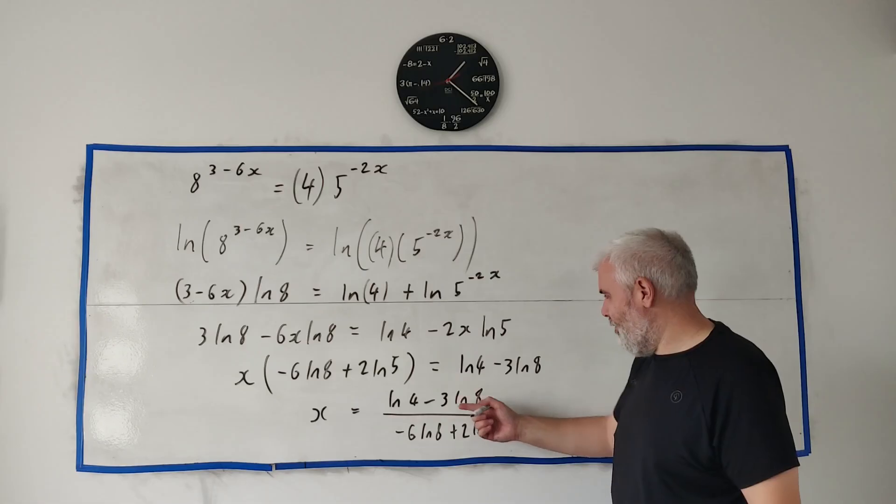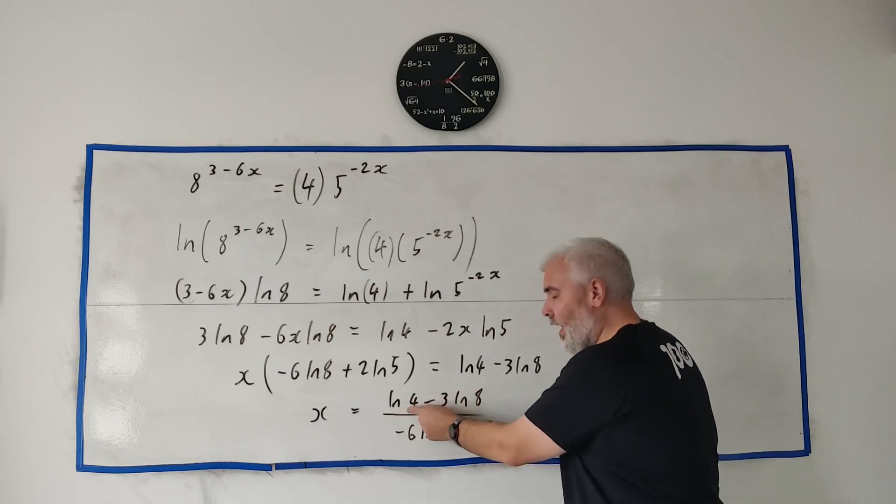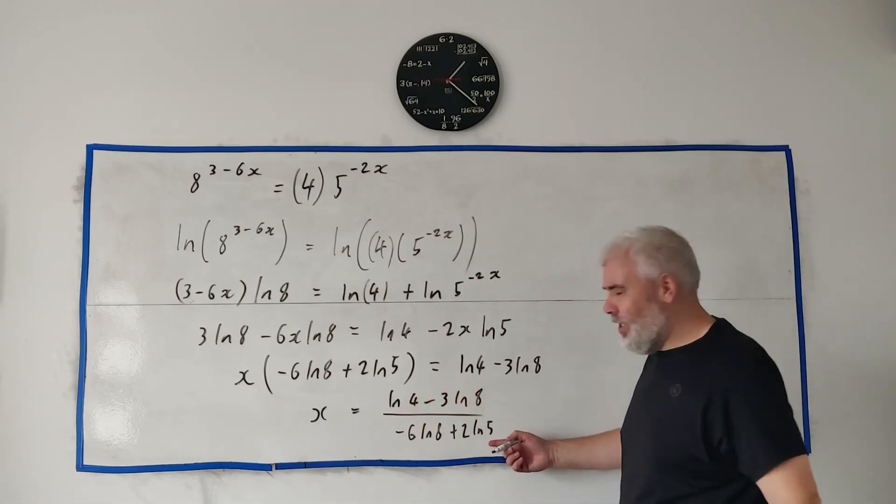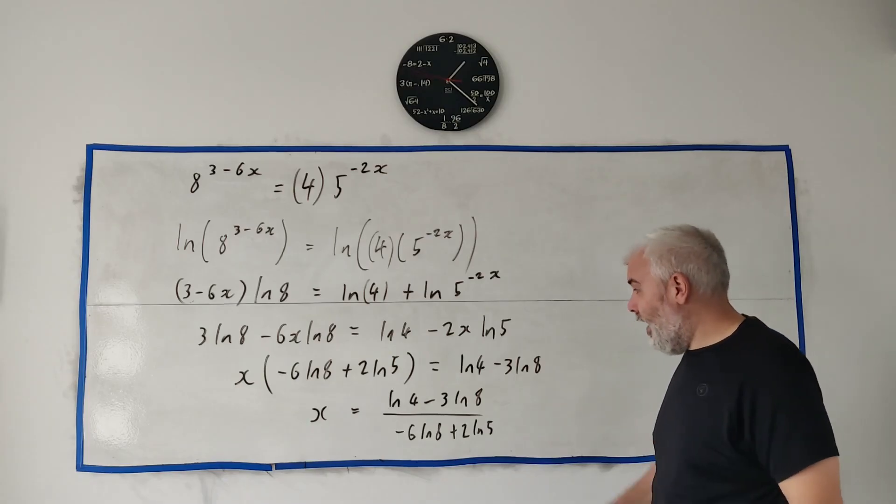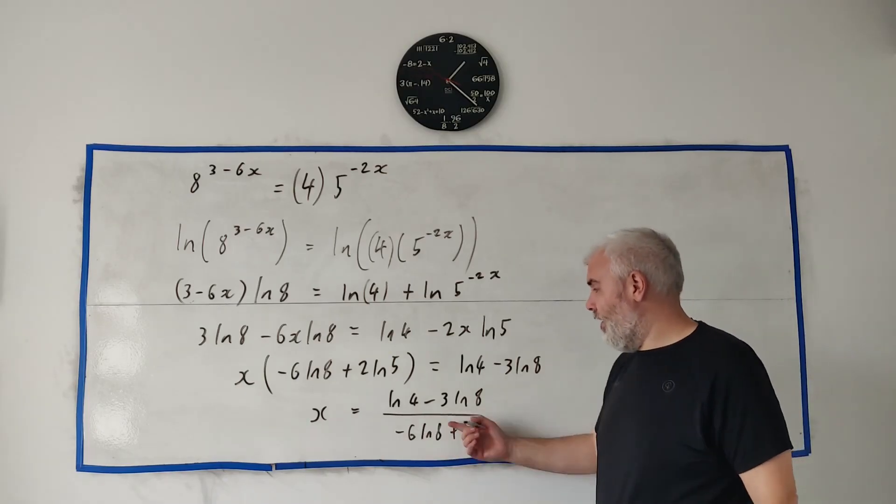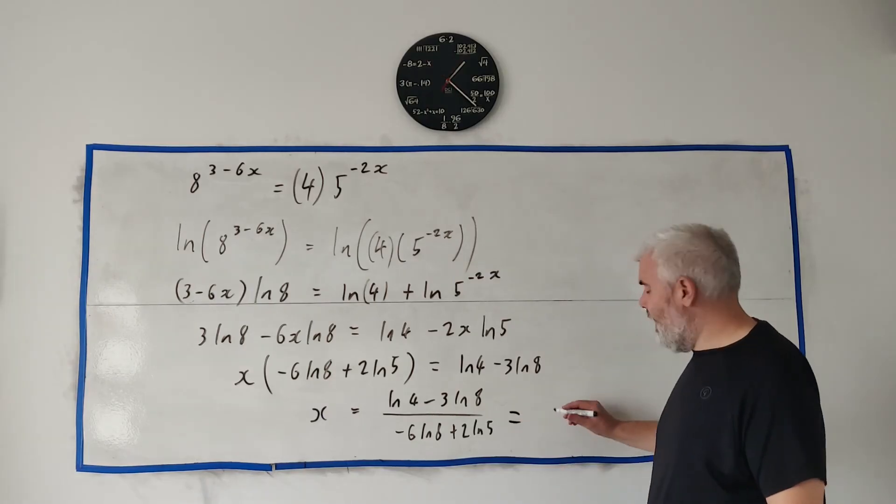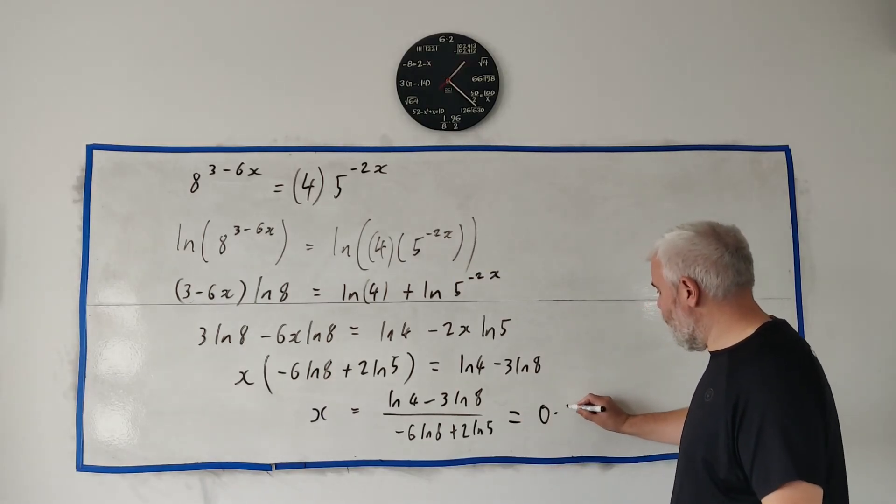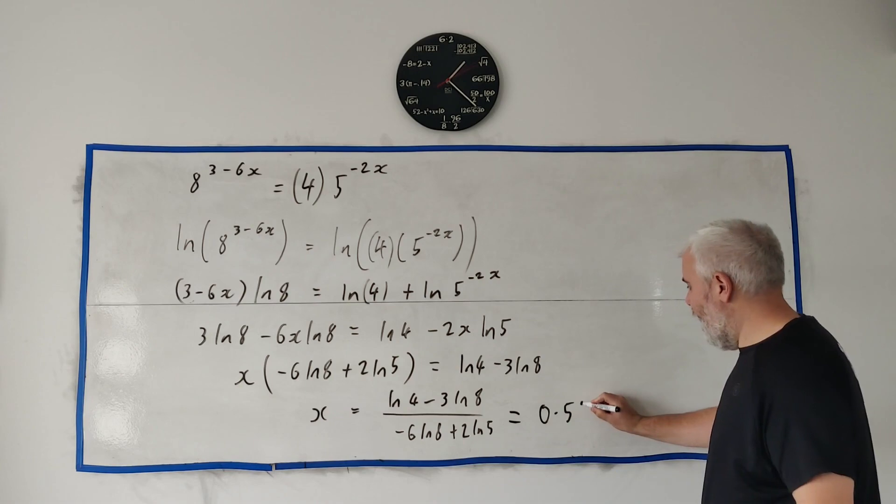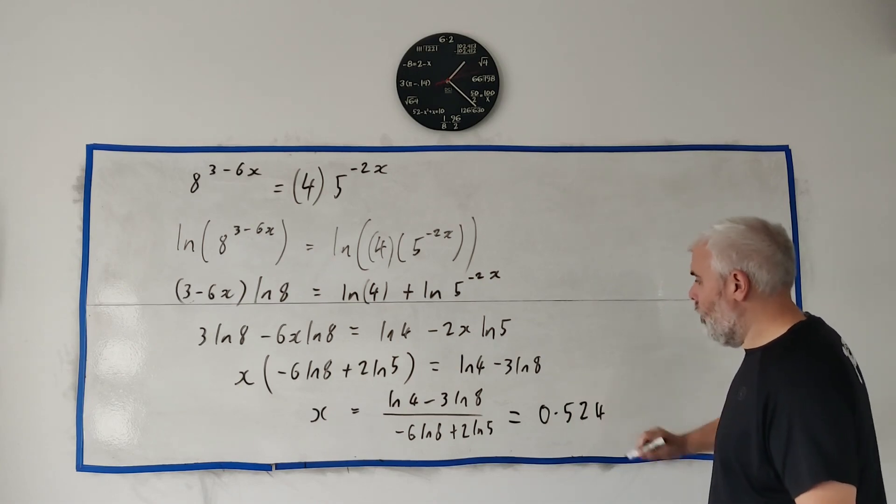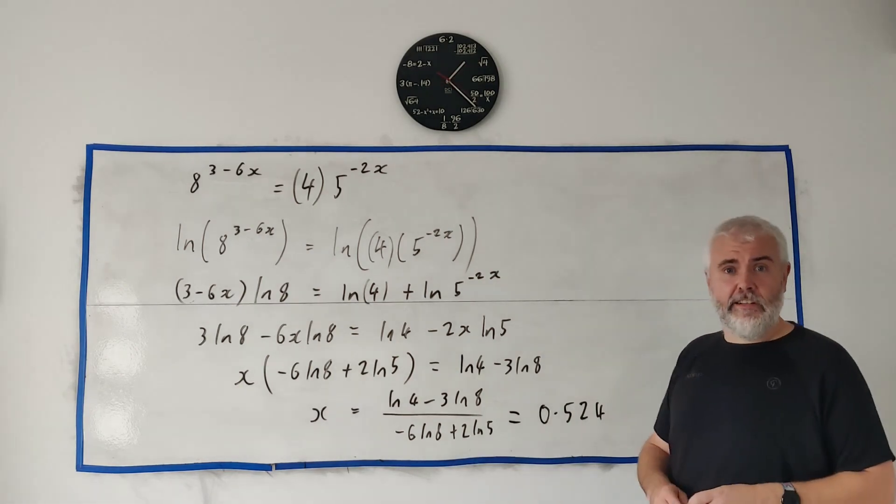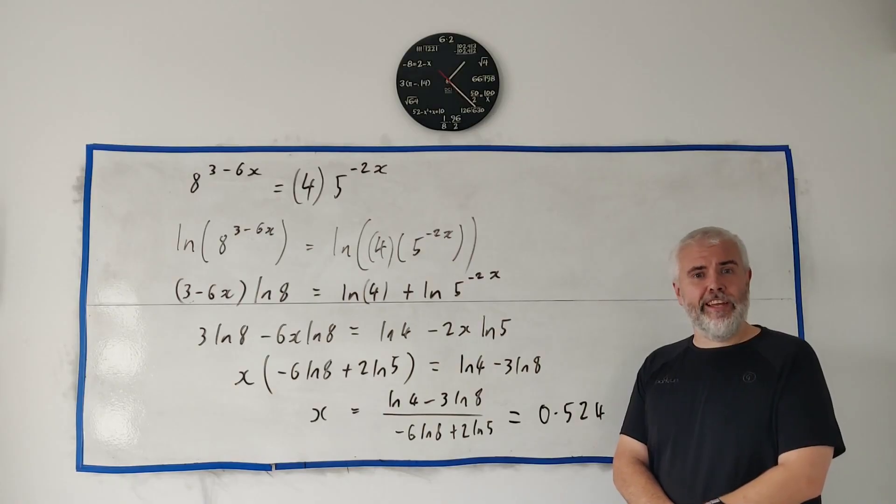But it'll never get too neat because these two logs will go together quite well, a 4 and an 8, but this 5 will never work too well. And really at the end of the day we have calculators. Put all of this in on a calculator and we get, rounded to three decimal places, 0.524. And that's the answer. Thank you for watching, have a great day.